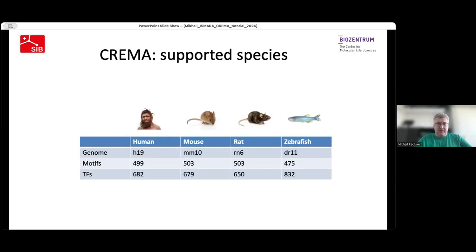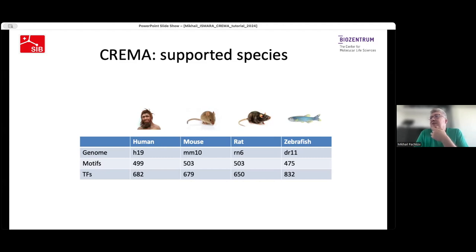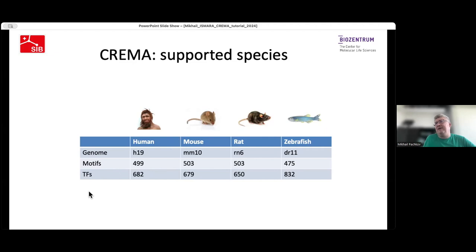Now let's move to CREMA. Like for ISMAR, here I show the list of species currently supported in CREMA — only four. There's no variety for genome versions here, but an updated version of human and mouse, hg38 and MM39, will be added to CREMA very soon. We use exactly the same collection of motifs and transcription factors as in ISMAR.